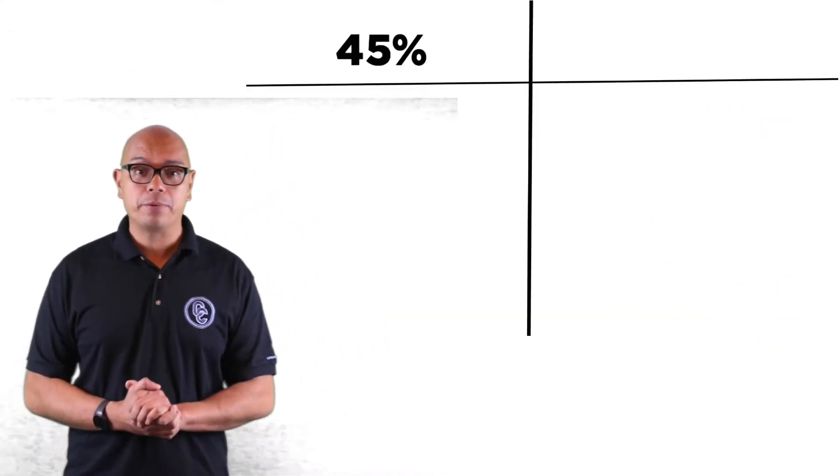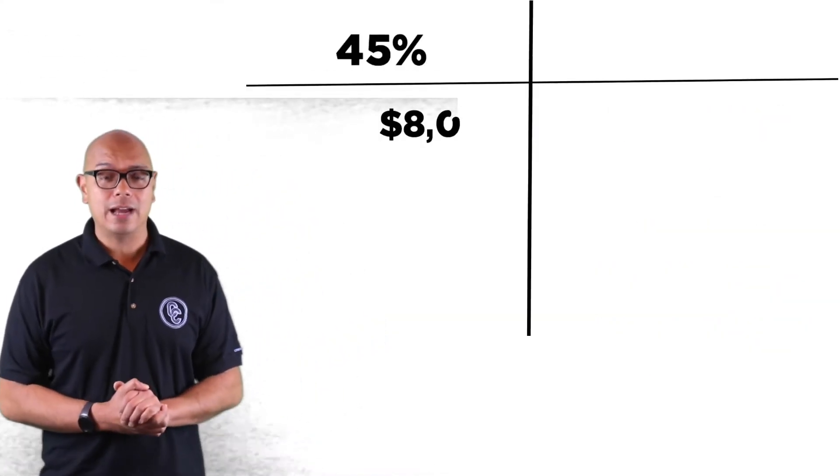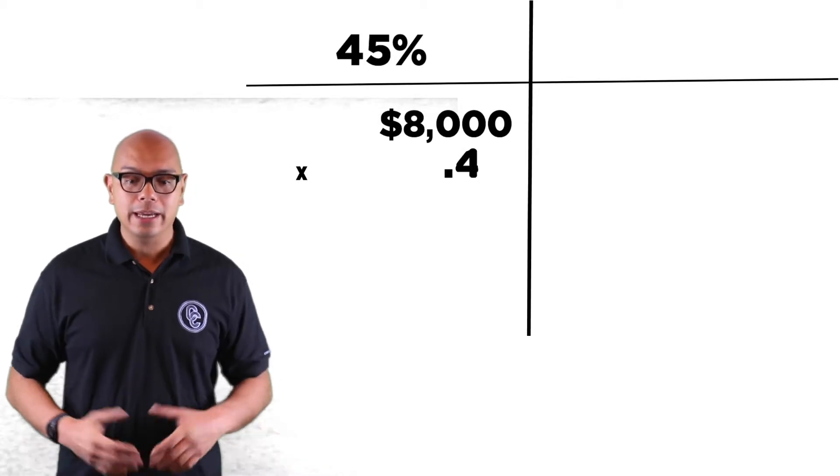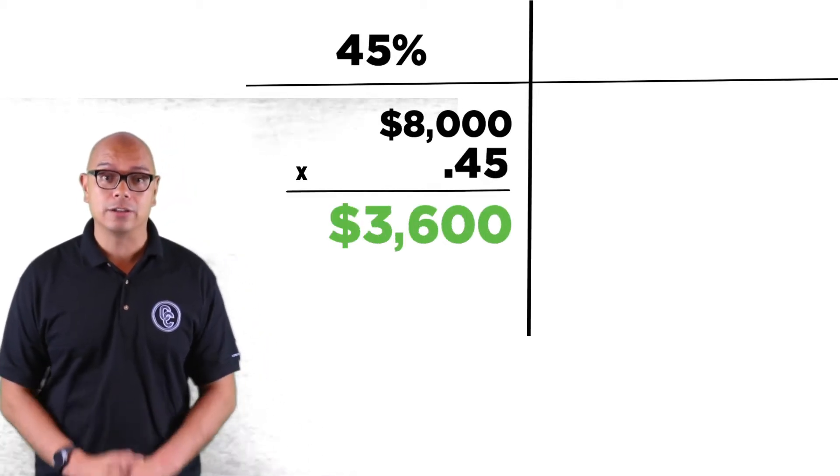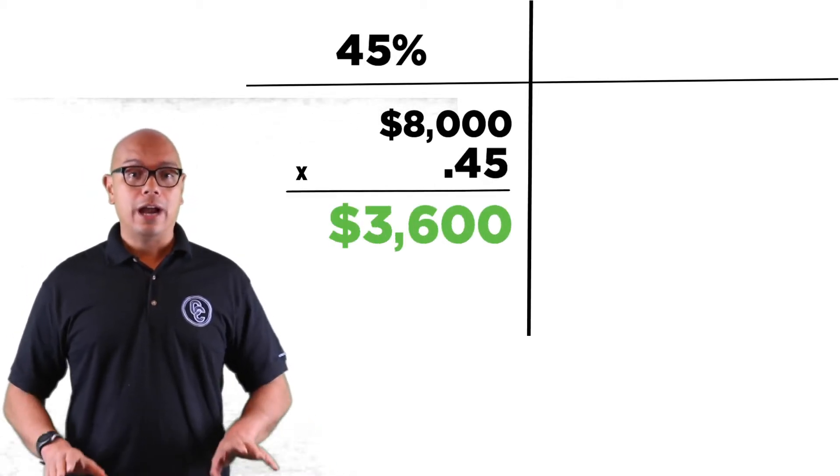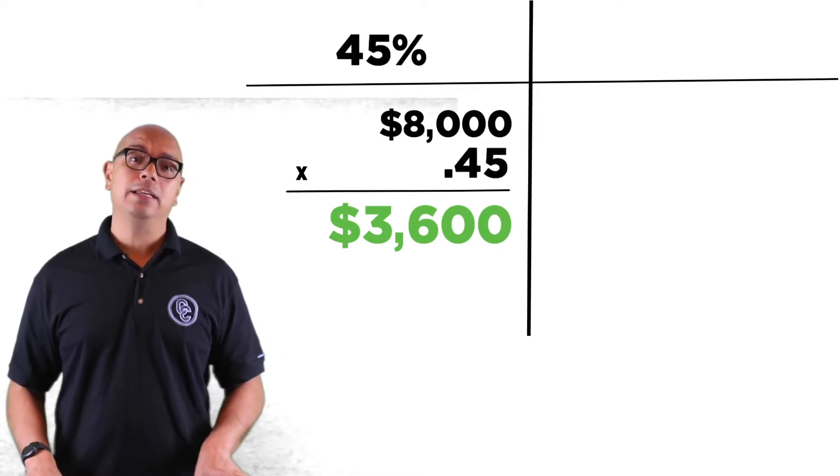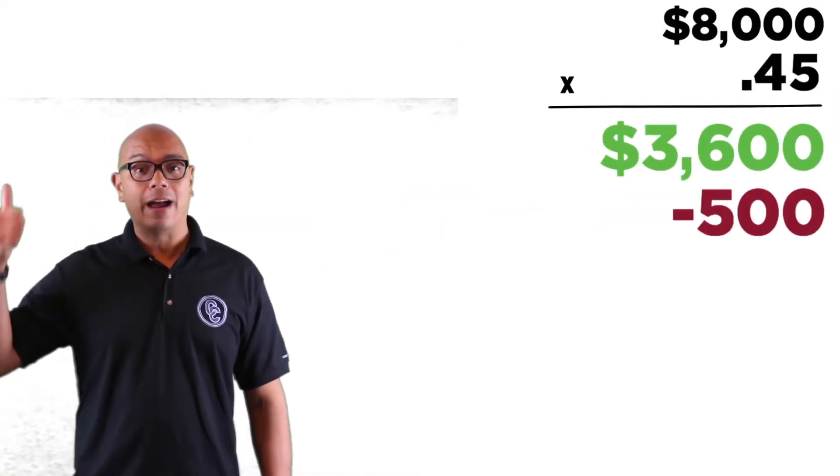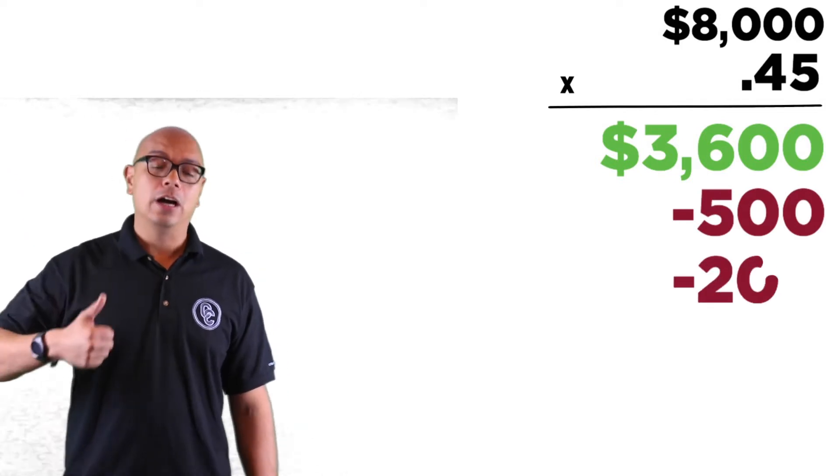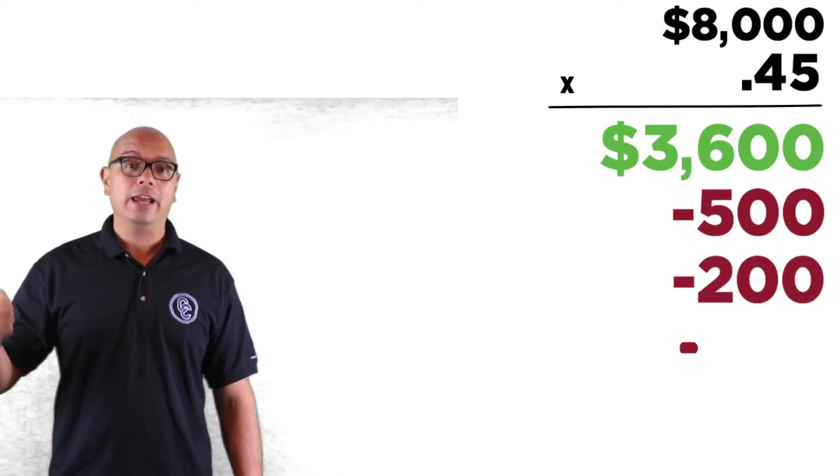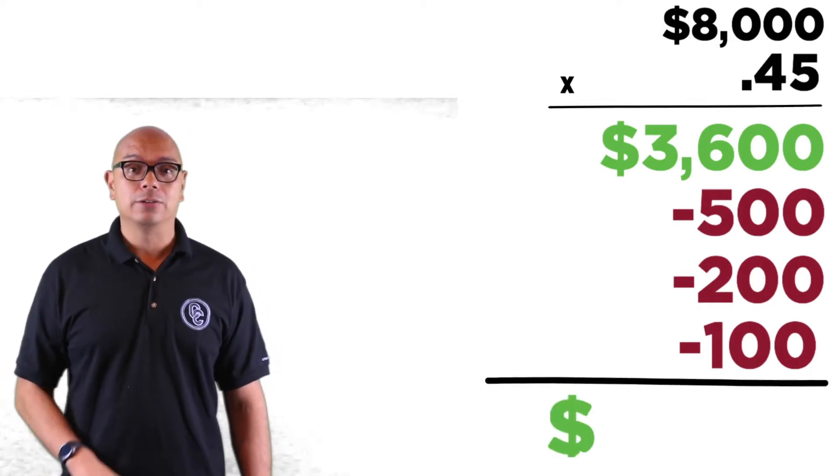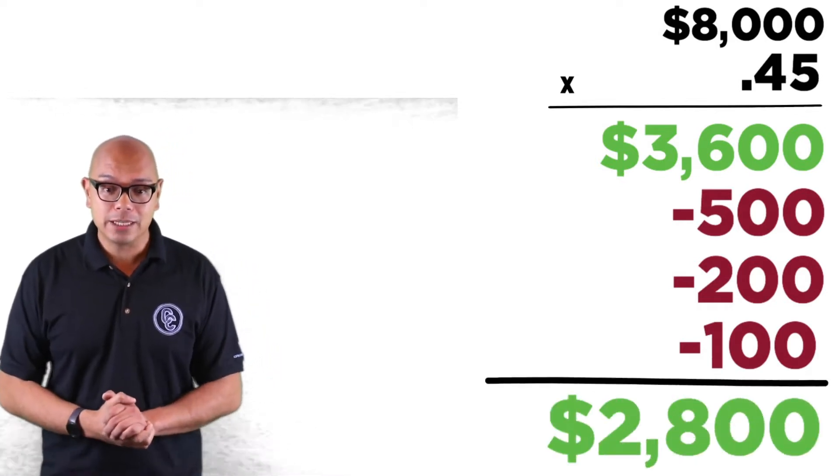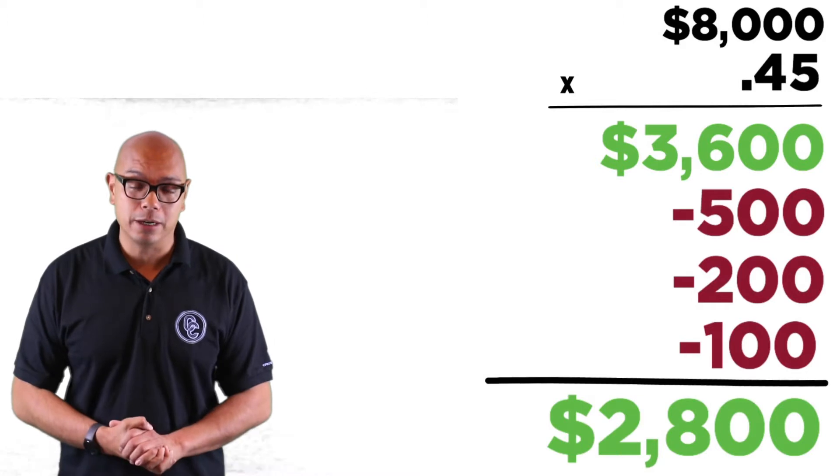So if we're going to use 45% of that $8,000 household income, it comes out to about $3,600 a month. Of course, you have to subtract every liability that's on your credit report. So this particular client has a $500 car payment, a $200 student loan, and a $100 credit card debt a month. So what's left over comes out to $2,800 a month.